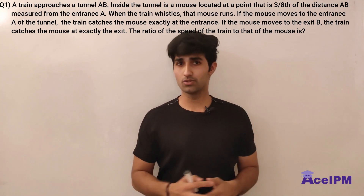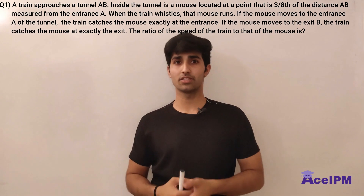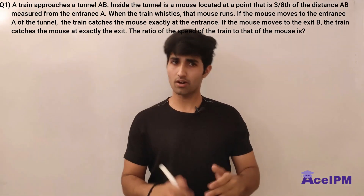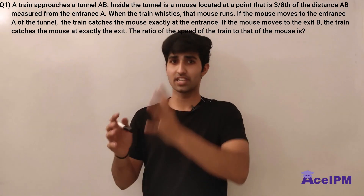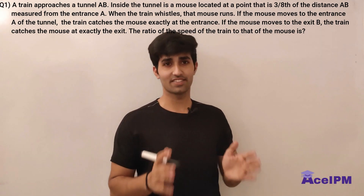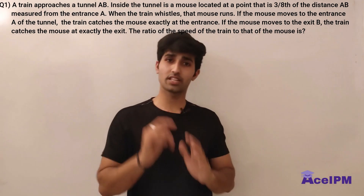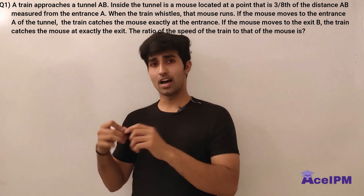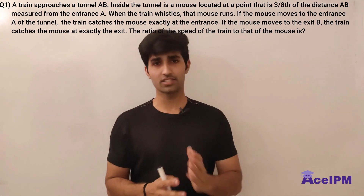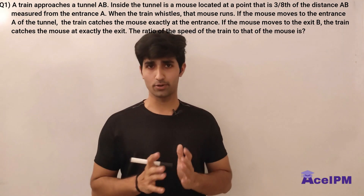In this question there are no values given, which blocks our thought process about what value to start with, since everything is variable. I'm going to solve it with a shorter approach only. My recommendation is that you try to solve it yourself — pause the video, try it with variables like speed of train T and speed of mouse M. You can also check the solution in the mock, where I solved it with a general approach.